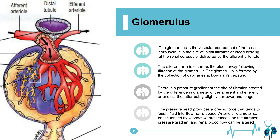Blood is delivered by the afferent arteriole. The efferent arteriole carries the blood away following filtration at the glomerulus. The glomerulus is formed by a collection of capillaries at Bowman's capsule. There is a pressure gradient at the site of filtration, created by the difference in diameter of the afferent and efferent arterioles, the latter being slightly narrower and longer.